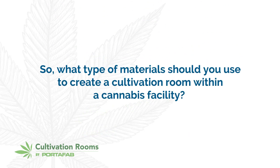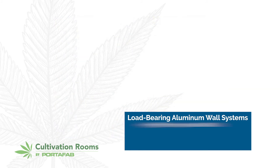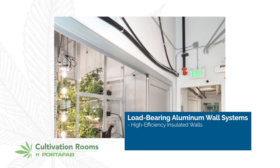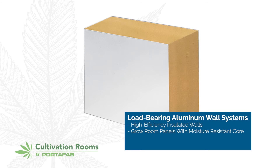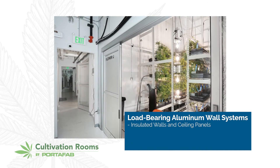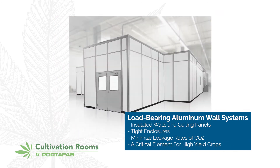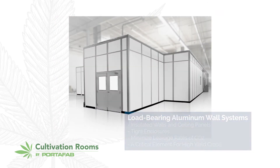So what type of materials should you use to create a cultivation room within a cannabis facility? At Portafab, we specify our load-bearing aluminum wall systems with high efficiency insulated walls and grow room panels that feature a moisture resistant core, easy to clean surfaces, and non-outgassing materials for chemical-free crops. Insulated walls and ceiling panels with tight enclosures can also minimize leakage rates of supplemental CO2, a critical element in the production of a high-yield crop.